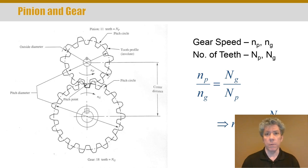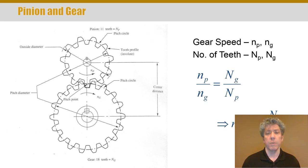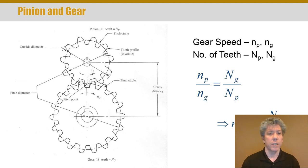You can solve for anything you like from this equation — the speed of the gear, for example, if you know the speed of the pinion and the number of teeth on each. If the gear doesn't move at that speed, teeth are being sheared off somewhere, so hopefully things are following this equation.